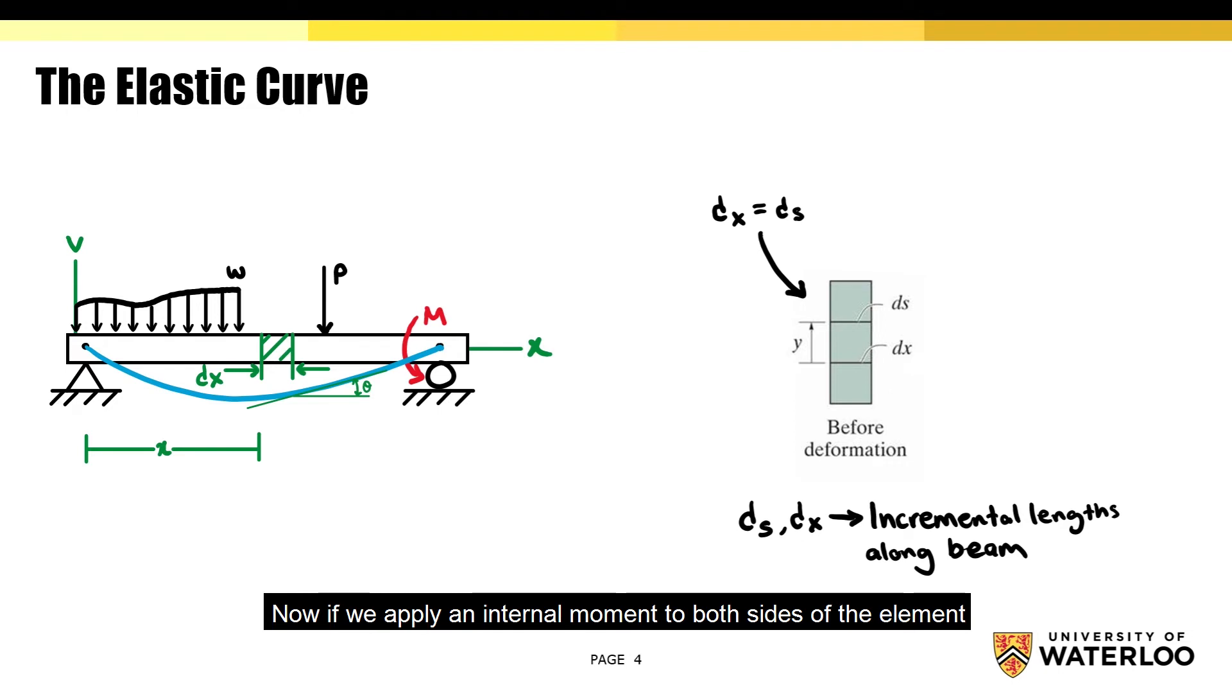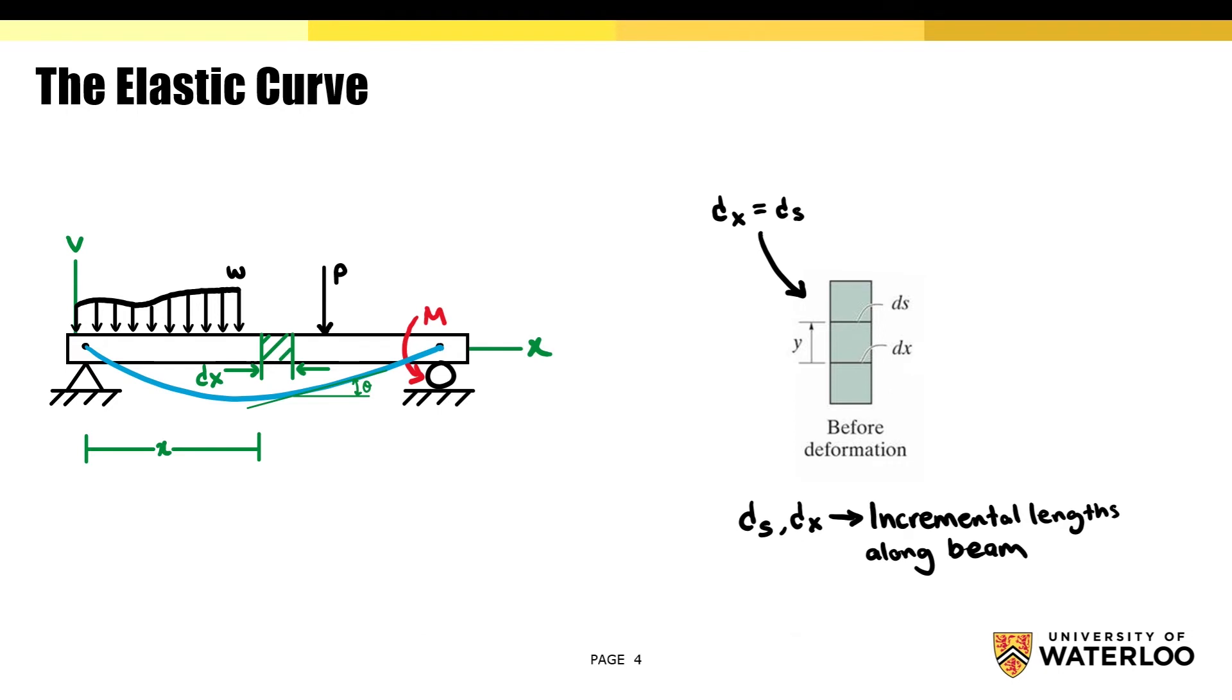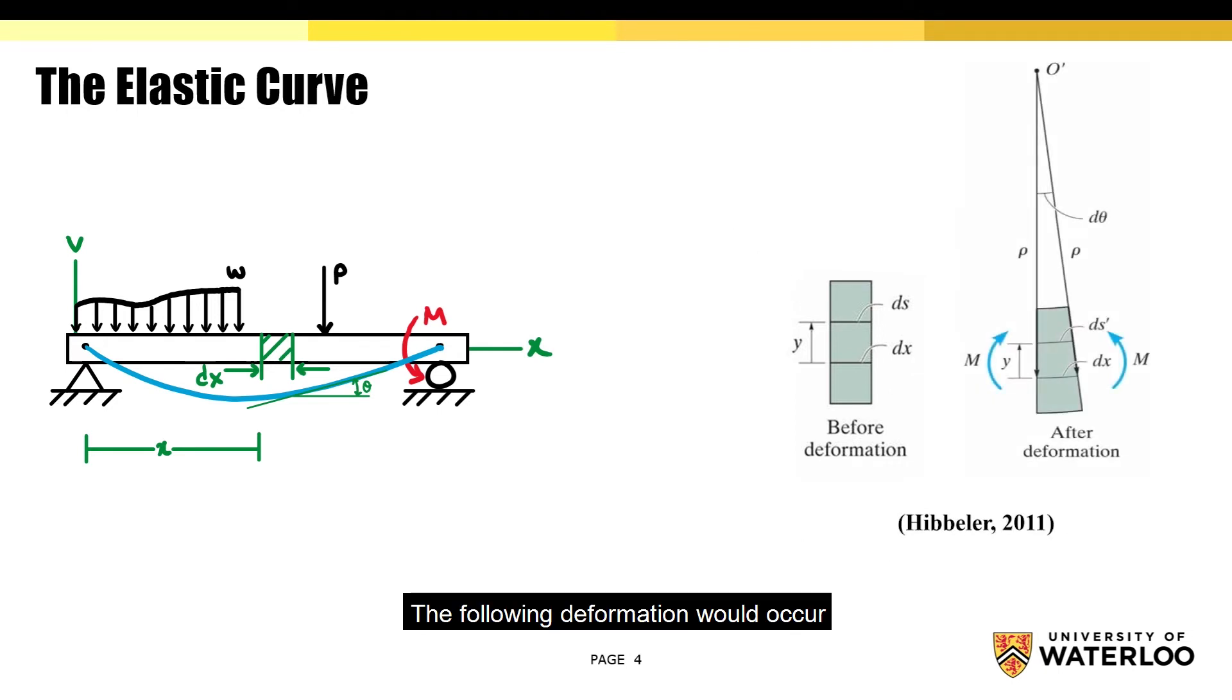Now, if you apply an internal moment to both sides of the element, the following deformation would occur. Due to this deformation, the top length is being compressed, and so dx is now longer than ds. The top compressed length has been labeled as ds'. It's important to note that dx remains the same. This is simply because the length is located in the middle of the beam, and so the length is neither stretched nor compressed.